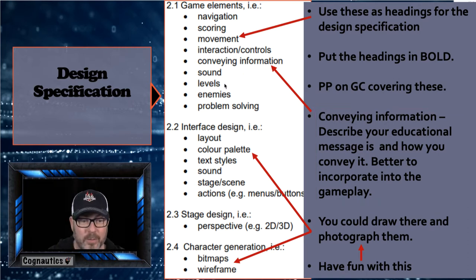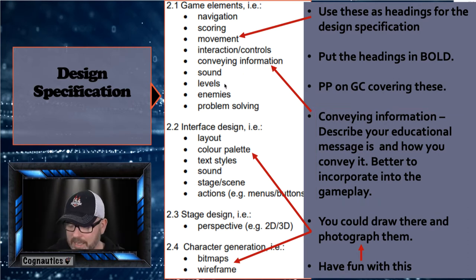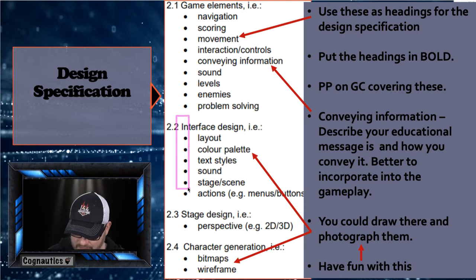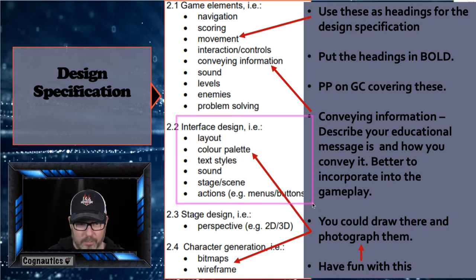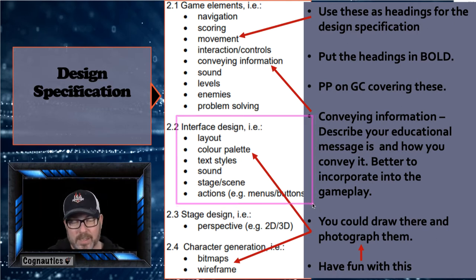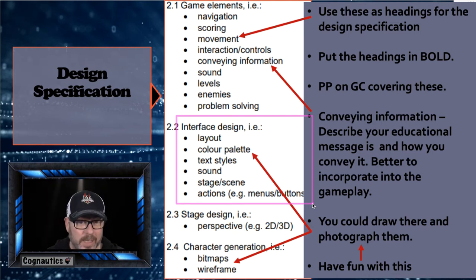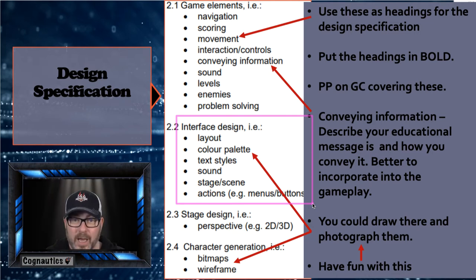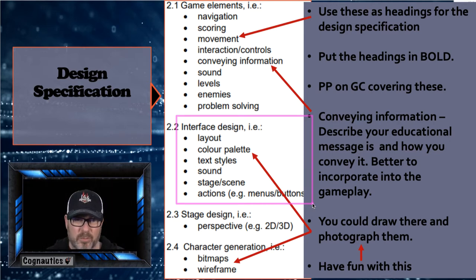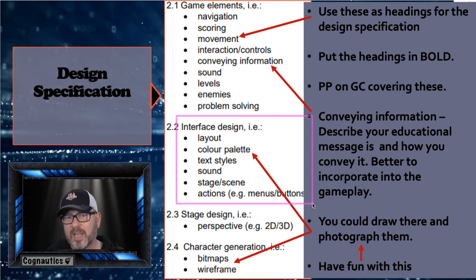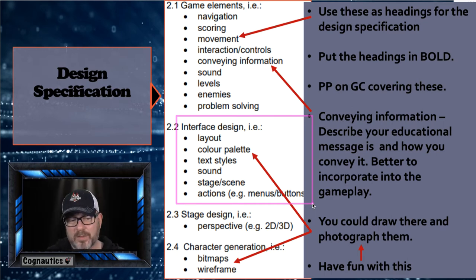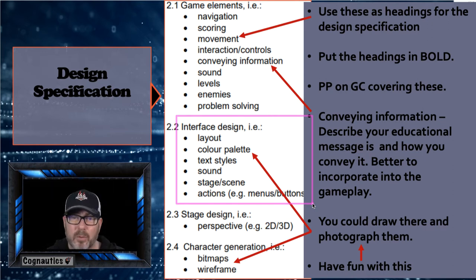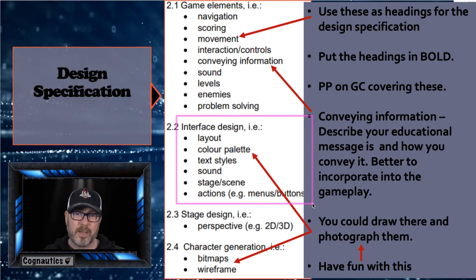The next area to think about is the interface design itself. Key considerations will be the layout, what it'll look like, the color palette, what colors you're going to use, what text you'll use, the font and text style, how sound will be used, the stage or scene, and talk about the actions, menus, calls to action, and buttons — how will that all appear.